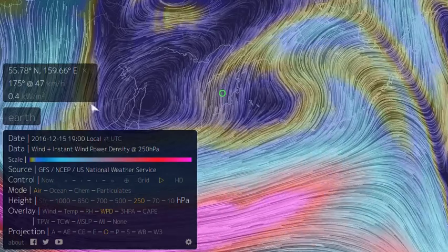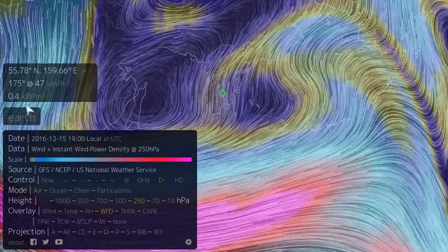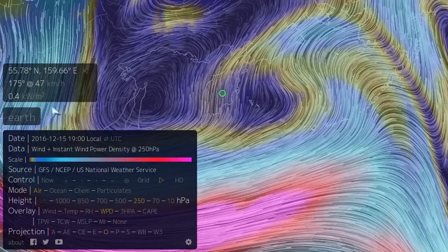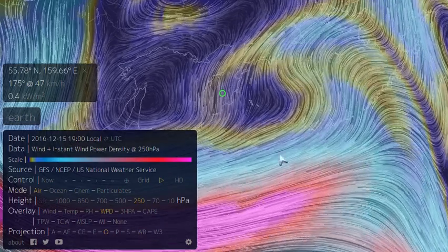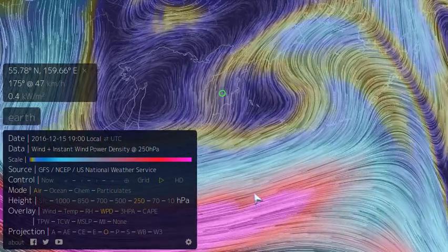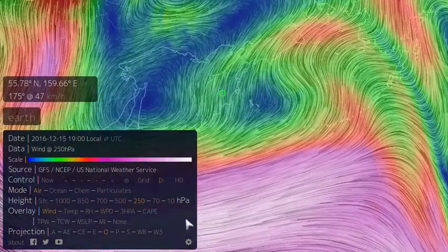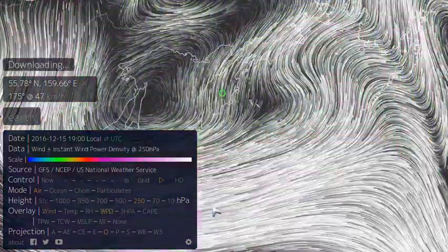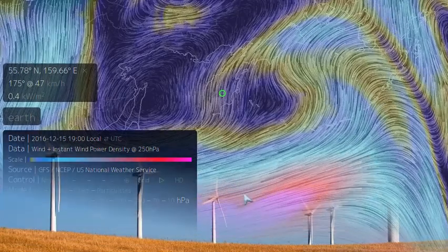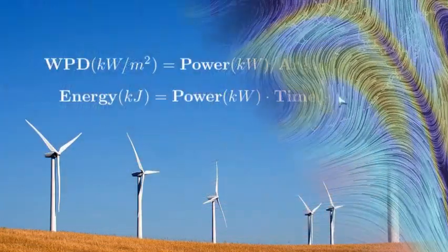You can look around. Over here we have 0.4 kilowatts per meter squared. So this instantaneous wind power density is related to the velocity we see on the ordinary wind, but it contains information about the amount of power or energy in the wind.